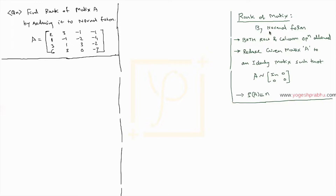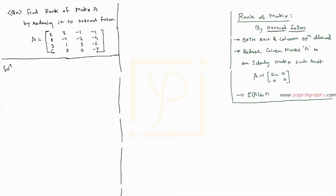Now we'll see how to find the rank of a matrix by normal form. I've written all the steps here, so we'll be performing all these steps. There is a question where we have a matrix A given and we're asked to find the rank of matrix A by reducing it to the normal form.